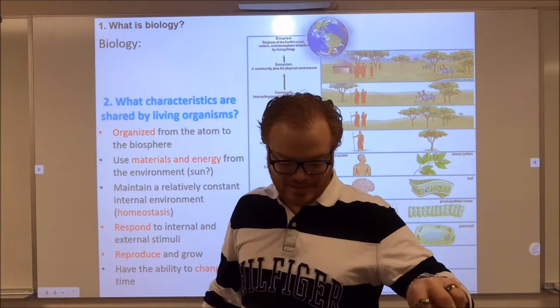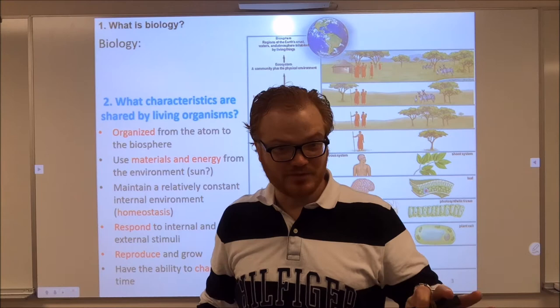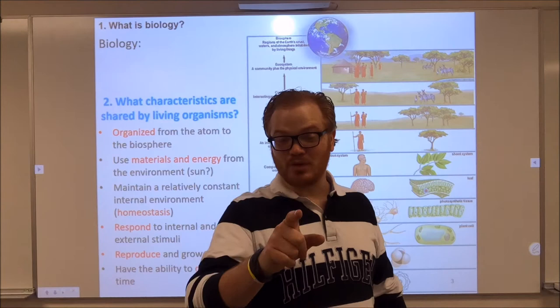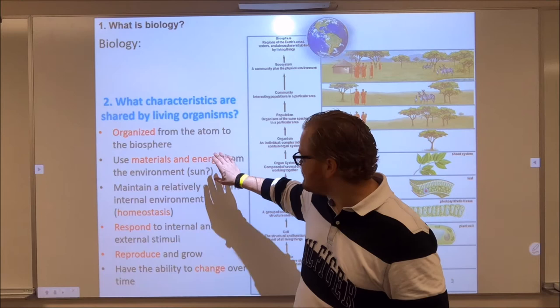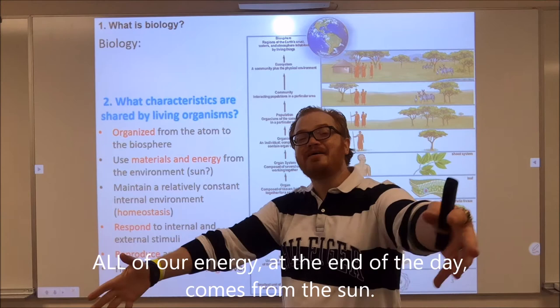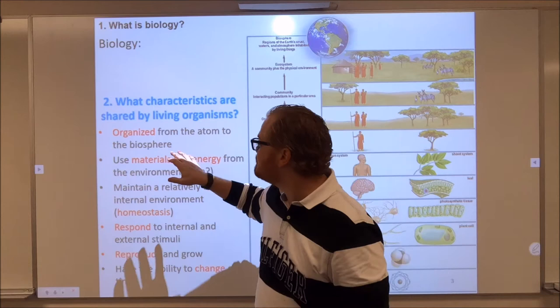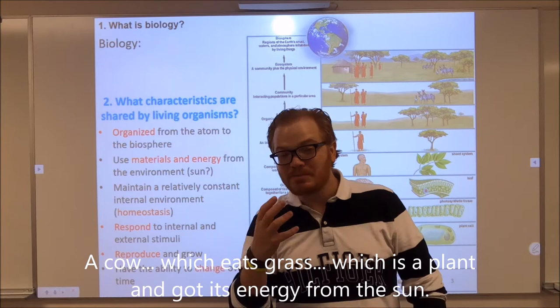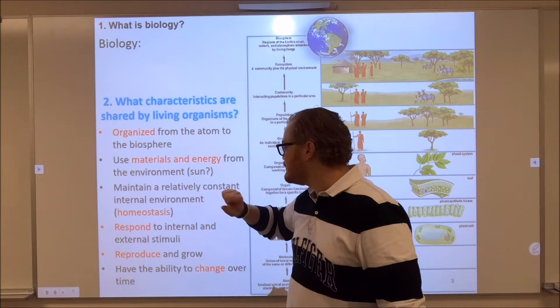We use materials and energy. This morning my wife made my daughter a Belgian waffle, she hated it, so I ate it — because somebody had to. That Belgian waffle is made out of grains; those grains are photosynthetic, they get their energy from the sun. We have to consume things in order to survive. All living things must utilize materials and energy — even plants get their energy from sunlight; you get yours from a cow when you eat a hamburger.